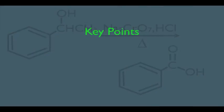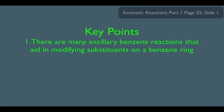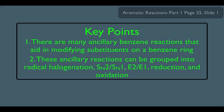So there it is, our key points here. Number one, we saw that there are many ancillary benzene reactions that aid in modifying substituents on a benzene ring. And we also saw that these ancillary reactions can be grouped into categories: radical halogenation, such as Br2 and light and NBS, SN2, SN1, E2, and E1 reactions, reduction reactions like we saw with H2 Pd/C, and oxidation reactions such as using KMnO4. I sometimes refer to these reactions as the flashcard reactions, as in it would be wise to maybe make flashcards of these and have them at your fingertips come your next orgo test.